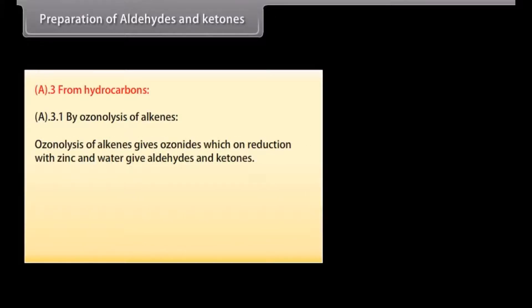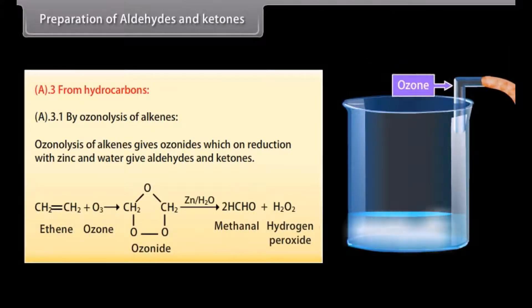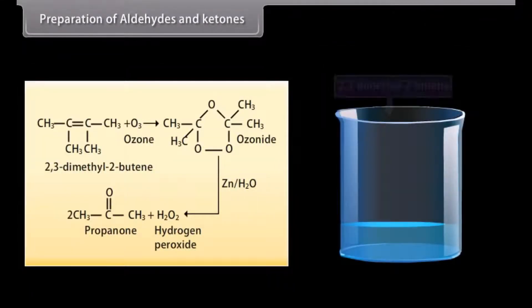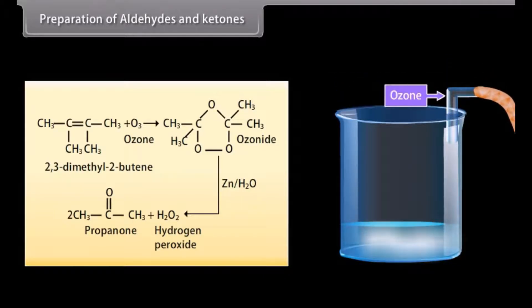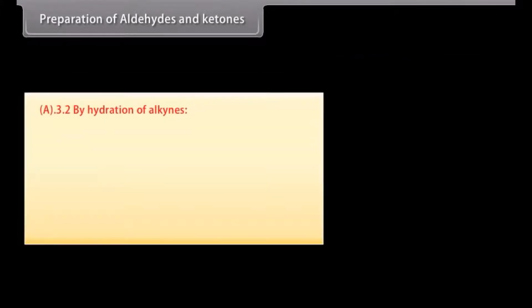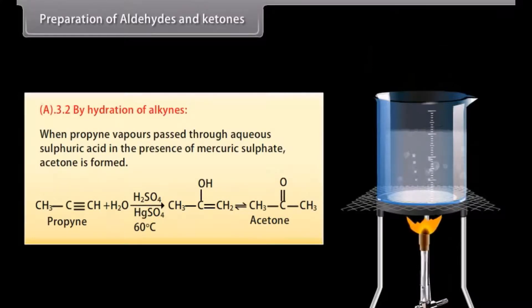Preparation from hydrocarbons. By ozonolysis of alkenes: ozonolysis of alkenes gives ozonides, which on reduction with zinc and water give aldehydes and ketones. Ozone gas reacts with ethene and forms an ozonide intermediate; on treatment with zinc and water, methanal and hydrogen peroxide are formed. Ozone gas reacts with 2,3-dimethyl-2-butene and forms an ozonide intermediate; on treatment with zinc and water, propanone and hydrogen peroxide are formed. By hydration of alkynes: when acetylene vapor is passed through aqueous sulfuric acid in the presence of mercuric sulfate, acetaldehyde is formed.